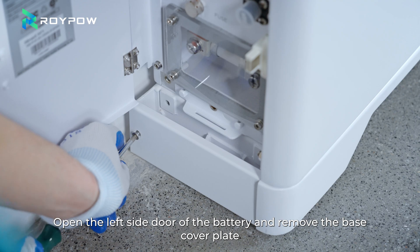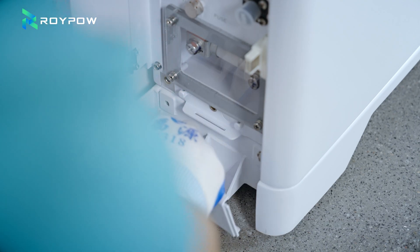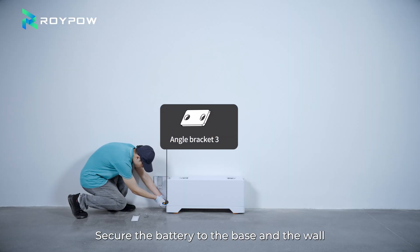Place the battery onto the base and secure it. Open the left side door of the battery and remove the base cover plate. Secure the battery to the base and the wall.